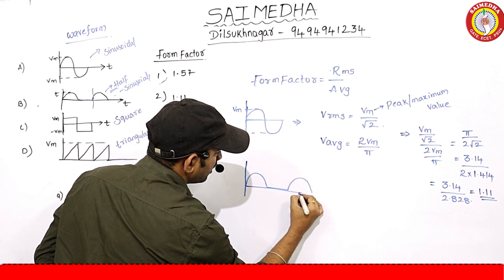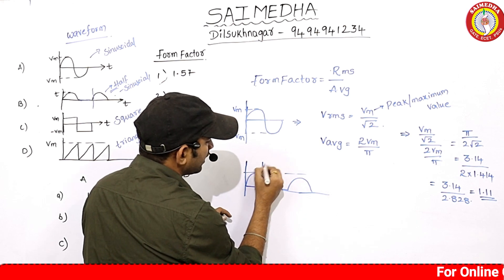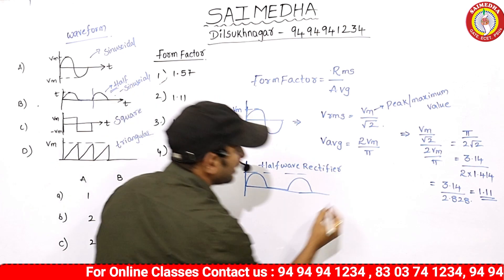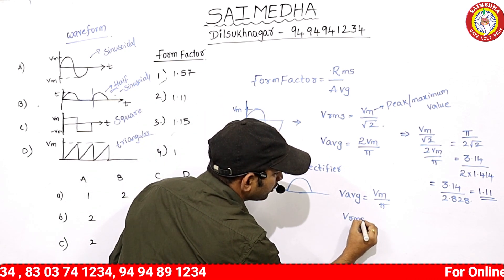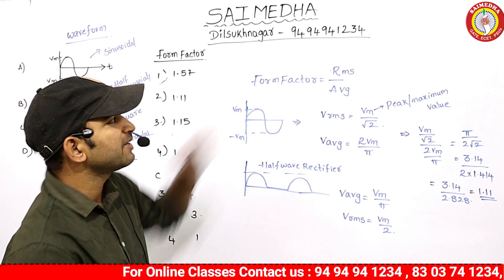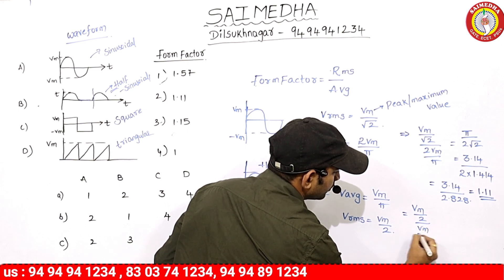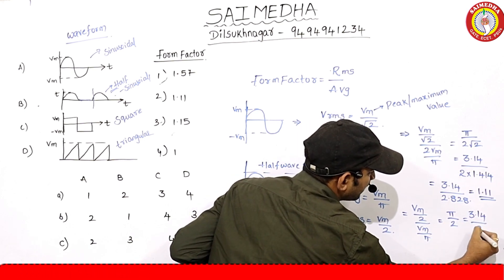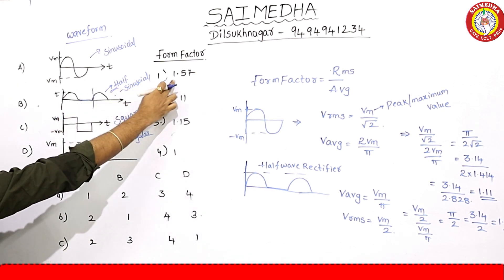For the half sinusoidal waveform — that is, the half wave rectifier — the average value equals Vm divided by pi, and the RMS value equals Vm divided by 2. So form factor equals RMS divided by average, which is (Vm/2) divided by (Vm/pi). Pi and pi cancel, giving pi divided by 2, which is approximately 1.57.